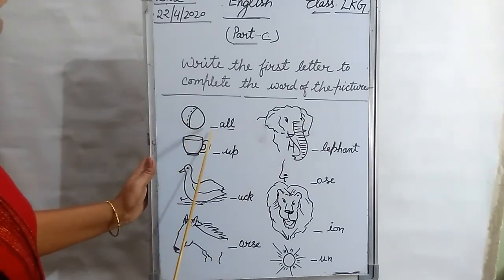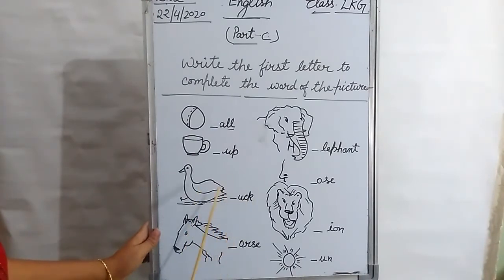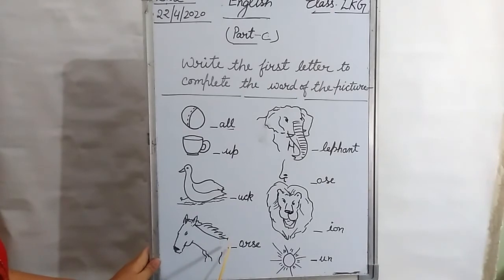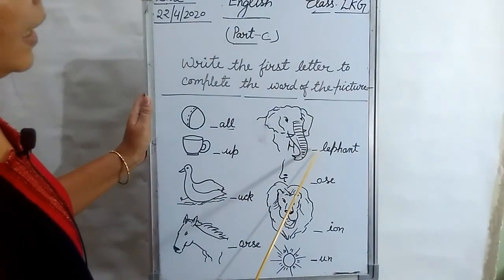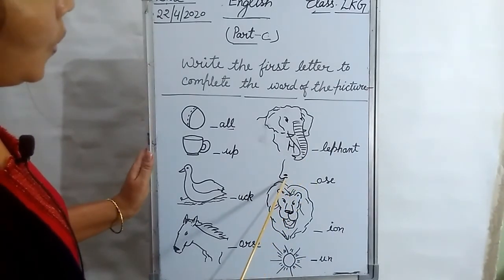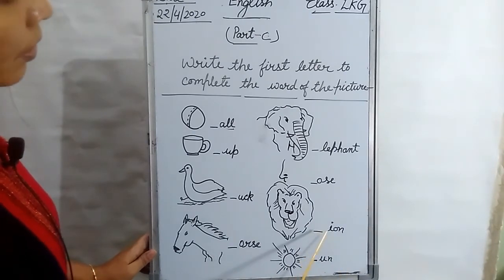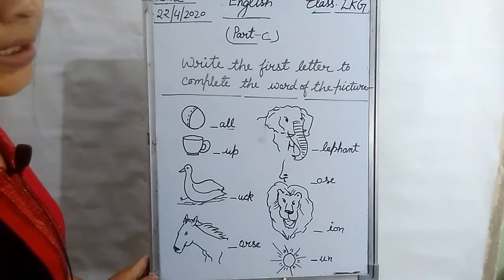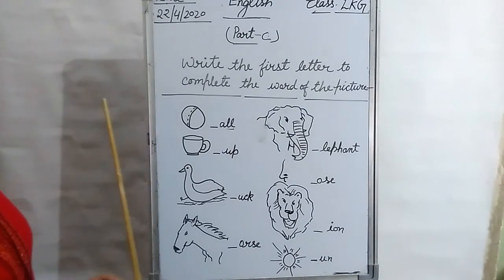This one is ball, so B-A-L-L, ball. You have to write here B. This one is cup — C-U-P, cup. So you have to write here C. And this one is duck — D-U-C-K. You have to write here D. And this one is horse — H-O-R-S-E, horse. So you have to write here H. And this one is elephant — E-L-E-P-H-A-N-T, elephant. You have to write here E. And this one is nose — N-O-S-E. Write here N. And this one is lion — L-I-O-N. You have to write here L. And this one is sun — S-U-N, sun. You have to write here S. And complete all the spellings.